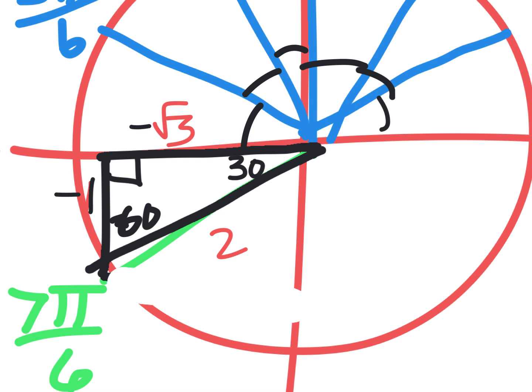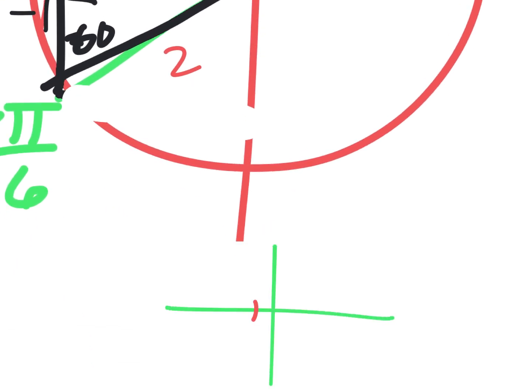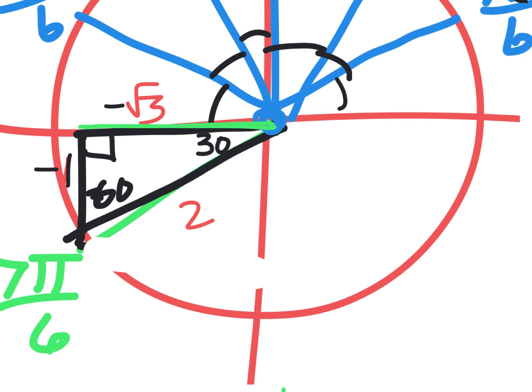Now is this triangle: got every angle labeled? Yup. Does it have every side labeled? Yup. How do you tell which ones are negative? When you start all your problems at the origin, you have to draw this triangle going left, and in math, going left means negative numbers. So if this line is going to the left, that is a negative direction, and going down is also a negative direction.